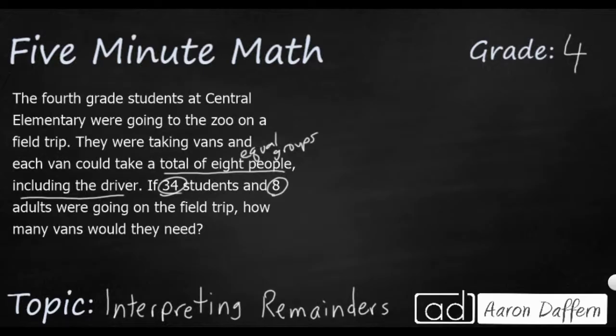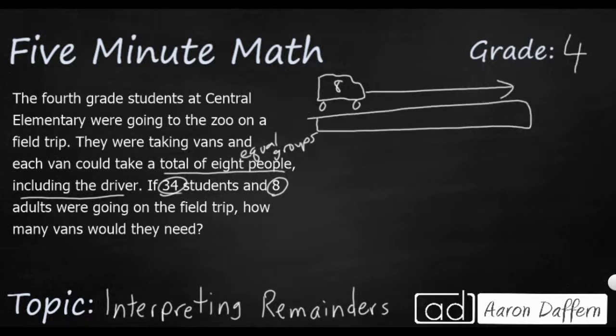Well, I've got vans of eight. So I'm just going to draw a little van here and get eight people in a van. How many am I going to need if I have, let's see, 34 kids and eight adults? Well, that's going to be 42. So I've got 42 people going and I can put them into vans of eight. So let's divide. Let's see how many eights we can get into 42. So the closest I'm going to be able to get is five because eight times five is 40. And that's going to leave me with two. So if I were just to do a simple division, eight divided into 42, we would say five remainder two.